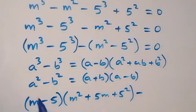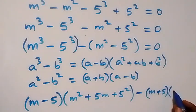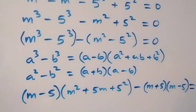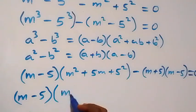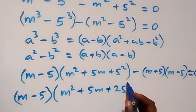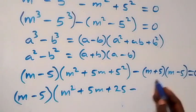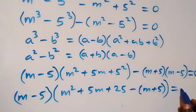For the second bracket we apply the difference of two squares — a squared minus b squared equals a plus b times a minus b — which gives minus open bracket m plus 5 times m minus 5, close bracket, equals zero.